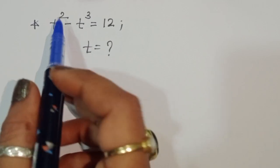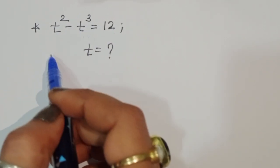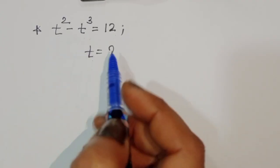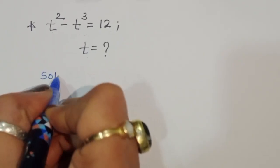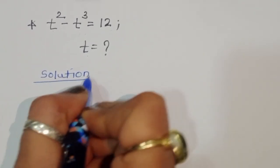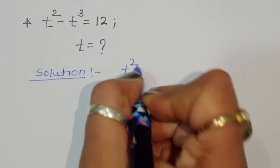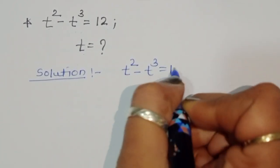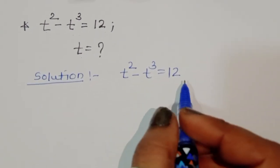The question is: t squared minus t cubed is equal to 12. We have to find out the value of t. Let's see the solution. The equation given is t squared minus t cubed is equal to 12.